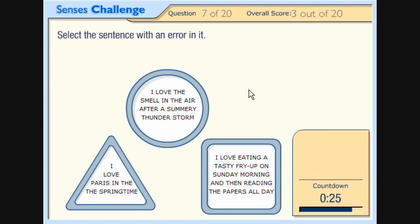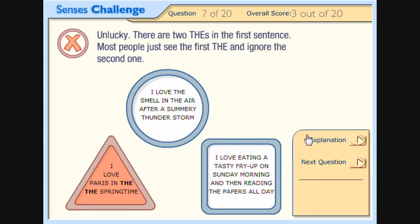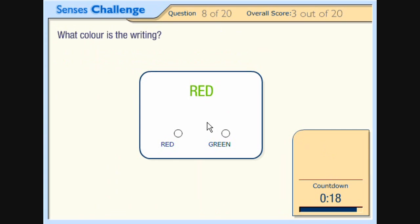Select the sentence with an error in it. I love Paris in the springtime. A shame there's no sound. Why isn't there any sound? I love the smell in the air after a summery thunderstorm. I love eating a tasty fry up on a Sunday morning and then reading the... That takes... Okay. I chose that because it was long and it didn't really make sense to me.